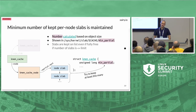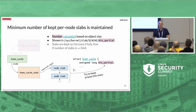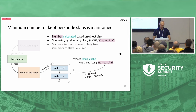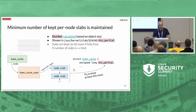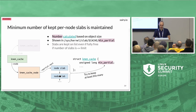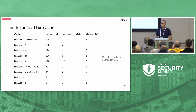For the per-node list there is also a limit, but it's not a hard limit. The value is called min_partial, and the SLUB allocator tries to keep at least min_partial slabs on the per-node list at all times. Even if slabs become fully free — normally the allocator would return them to the page allocator — if we don't yet have min_partial slabs on the per-node list, the allocator keeps them around. I have a table with specific numbers for kmalloc caches which I'll skip, as it's mainly reference material for exploit writers.